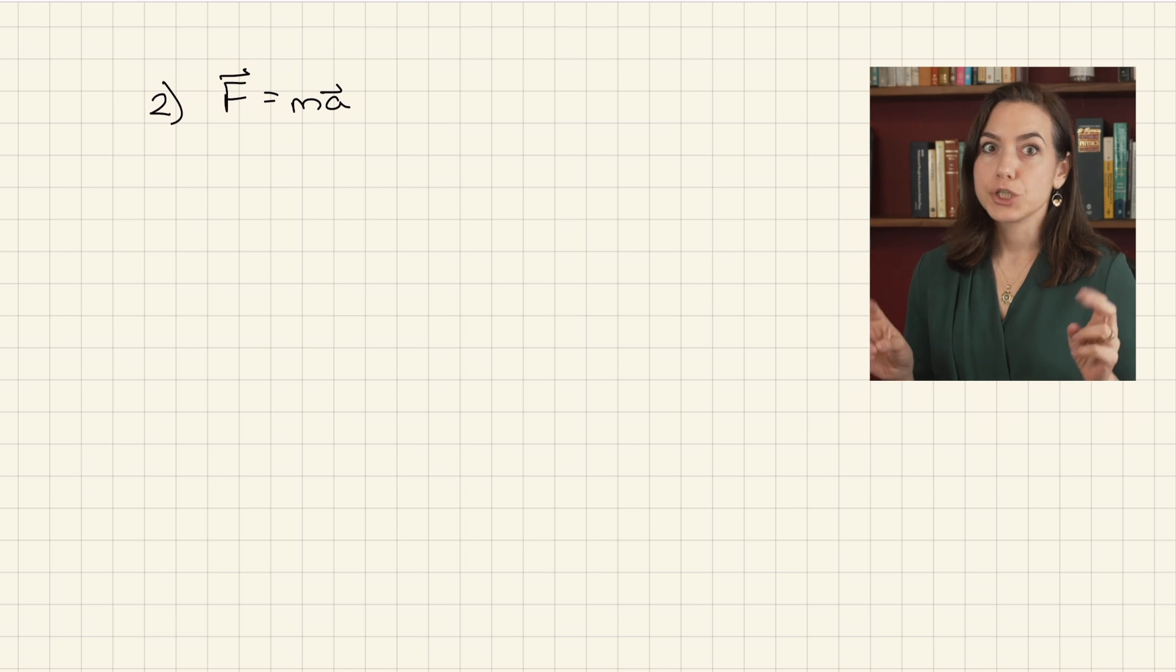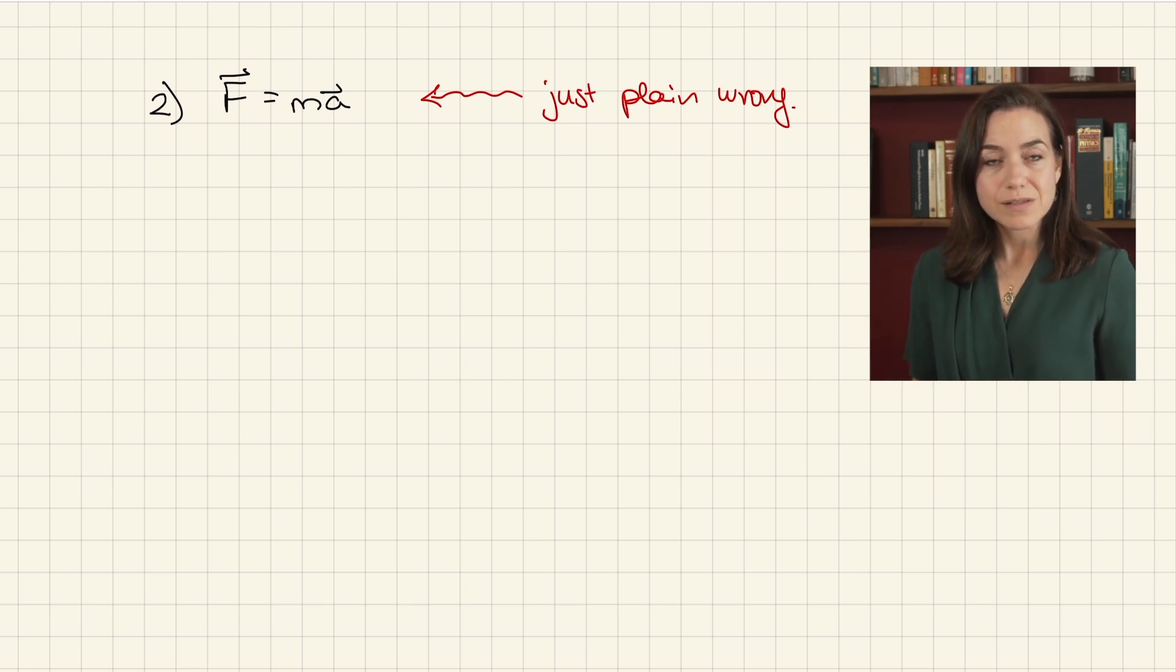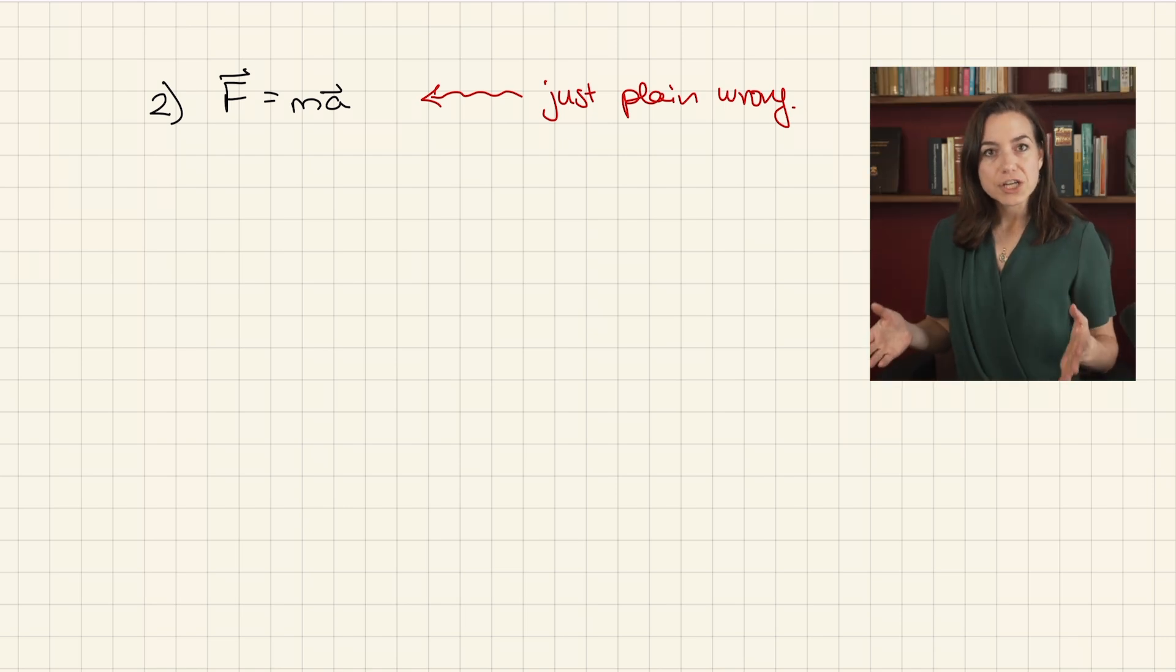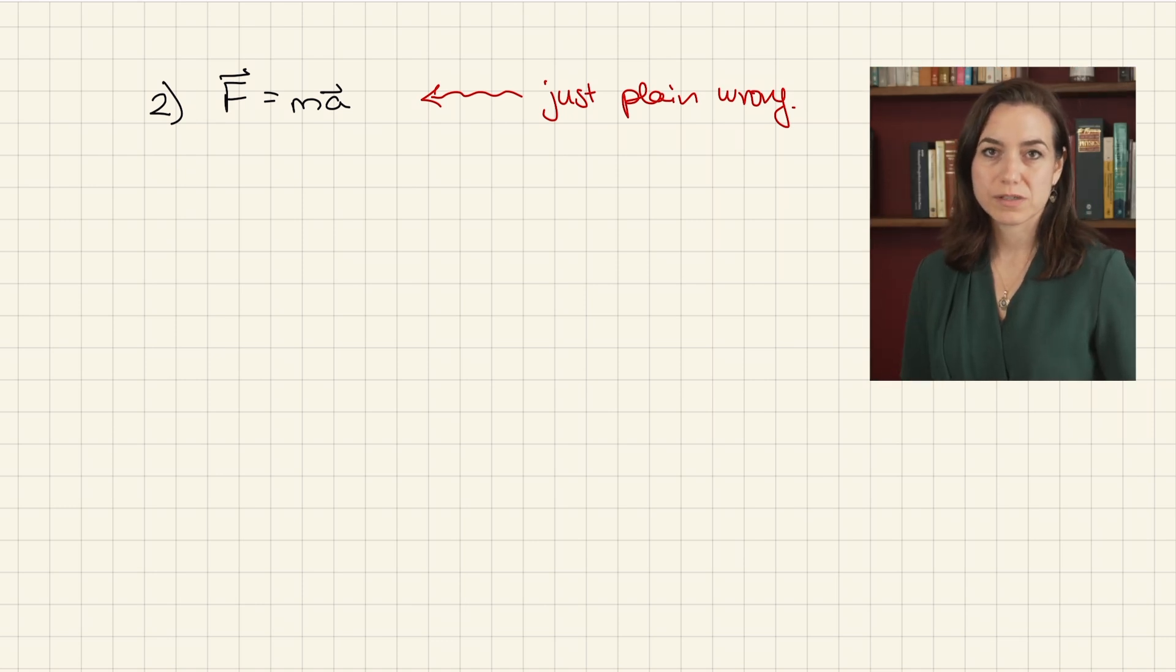Here is how it is just plain wrong. Writing it in this way leads many students to interpret this equation as the definition of a force, that there is a force which is mA. But mA is not a force. The definition of a force is an interaction between two objects, which simply means a push or a pull exerted by one object on another object. This is really important. You need two objects for a force. If you can't identify the two objects interacting, it is not a force.